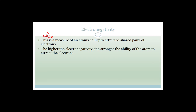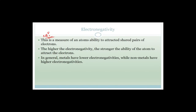The higher the electronegativity, obviously the stronger the ability to attract electrons. And conversely, the lower the electronegativity, the weaker the ability. So if you've got a high electronegativity, the atom will not only hold its own electrons close to it, but it will pull and attract the electrons of other atoms. Whereas if the electronegativity is very low, it will happily give its electrons away. In general, metals have lower electronegativities and nonmetals have higher electronegativities.